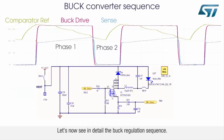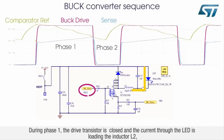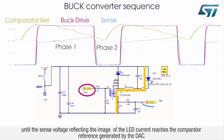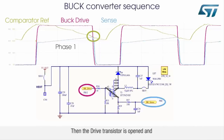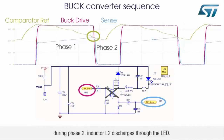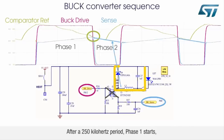During phase one, the drive transistor is closed and the current through the LED is loading the inductor L2 until the sense voltage, reflecting the image of the LED current, reaches the comparator reference generated by the DAC. Then the drive transistor is opened and during phase two, inductor L2 discharges through the LED. After a 250 kilohertz period, phase one starts again.